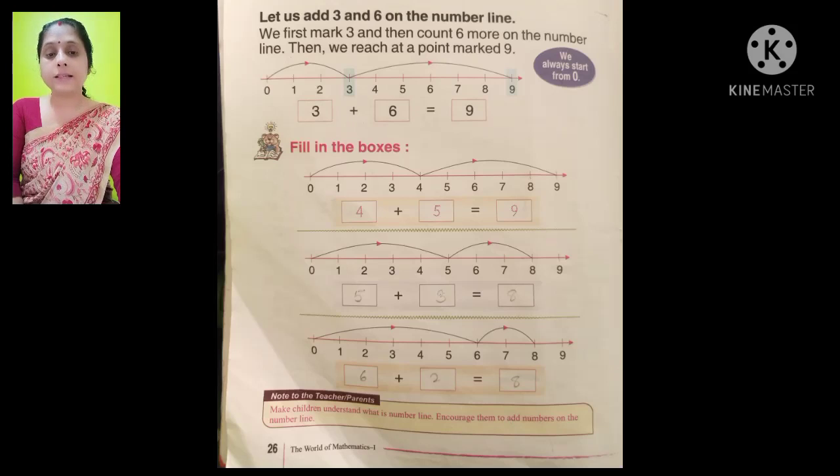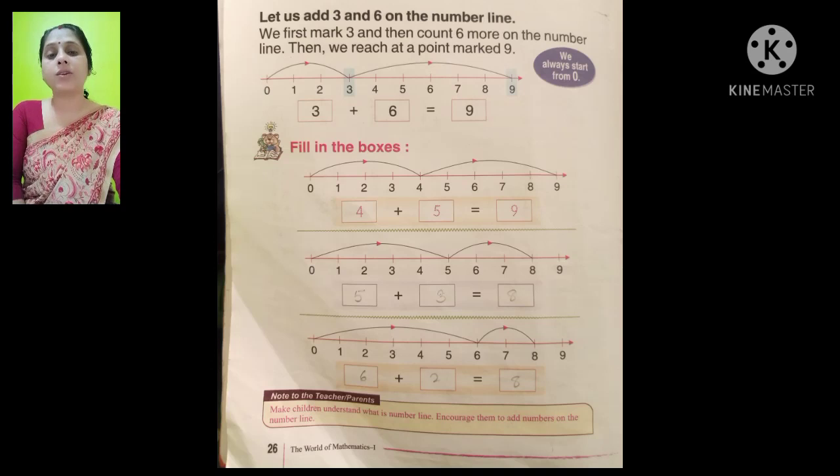And next is 6 plus 2. We will find out 6 on number line. After that, we have to go forward 2 numbers. We have 8 now. 6 plus 2 is equal to 8. This is the way to find out addition using number line.